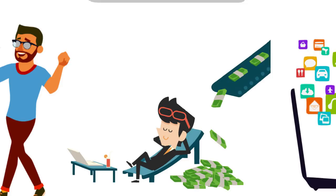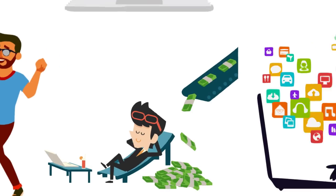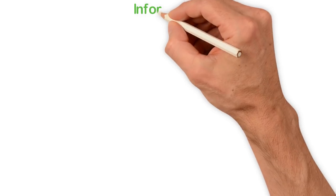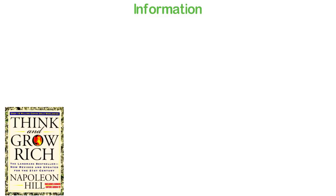Maybe that's even complex for some people to understand. Look at something simpler: information. In the year 1937, Napoleon Hill published a book called Think and Grow Rich.